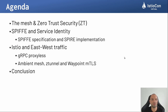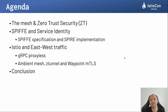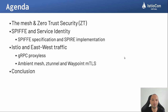For the agenda, we start by taking a look at the mesh and zero trust security — how they fit together and what the relationship between them is. Next, we go through SPIFFE and the service identity problem inside distributed workloads, looking at the SPIFFE specification details and the SPIRE implementation. Inside the Istio service mesh, we look at east-west traffic specifically and focus on gRPC, taking a look at the evolution of the protocol inside the project. Starting with gRPC proxyless, we deep dive into how it works. Then we deep dive into the ambient mesh — ztunnel, waypoint, and all the layer 4 and layer 7 capabilities related to this. We finish with the conclusion and wrap-up.